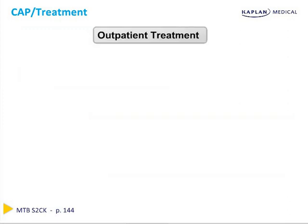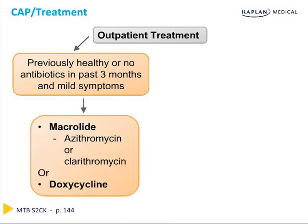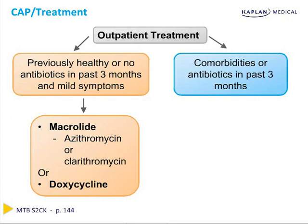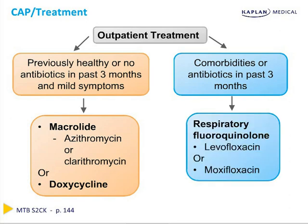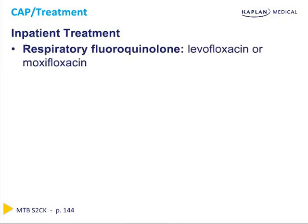If a patient is eligible for outpatient management and is previously healthy with no antibiotics in the past three months and mild symptoms, you can use either a macrolide like azithromycin or clarithromycin, or doxycycline. If the patient has medical comorbidities or has used antibiotics in the past three months, you're better off going with a respiratory fluoroquinolone such as levofloxacin or moxifloxacin. If the patient is admitted to the hospital, intravenous antibiotics should be given — either a respiratory fluoroquinolone like levofloxacin or moxifloxacin, or more commonly ceftriaxone and azithromycin, both given intravenously.